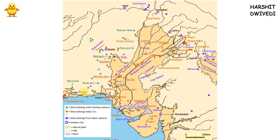The eastern limit of Indus Valley civilization is a place named Alamgirpur in the Meerut district of Uttar Pradesh. This is the easternmost boundary of Indus Valley civilization.